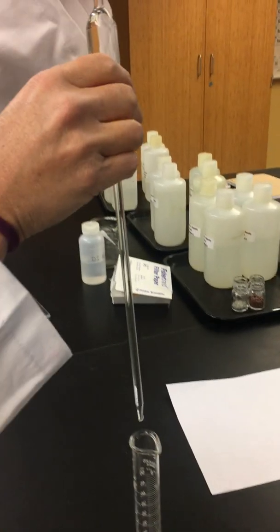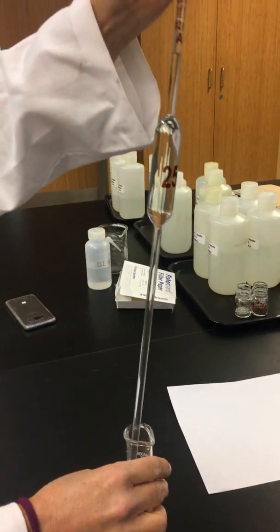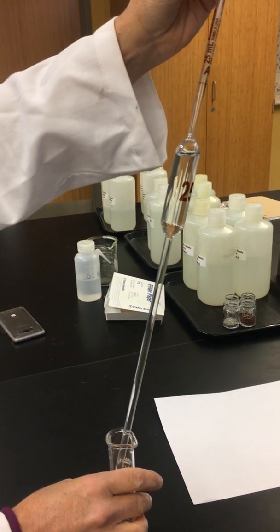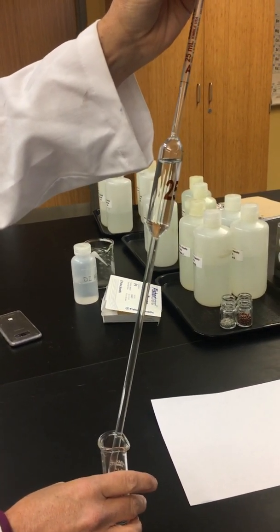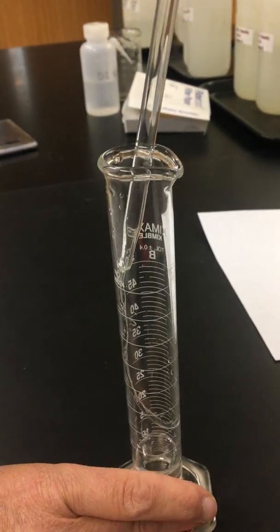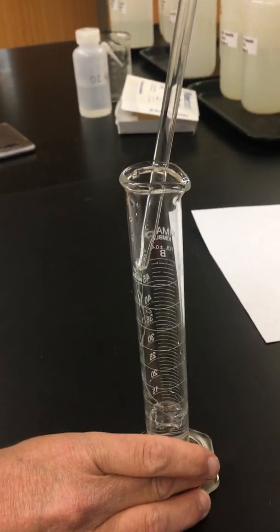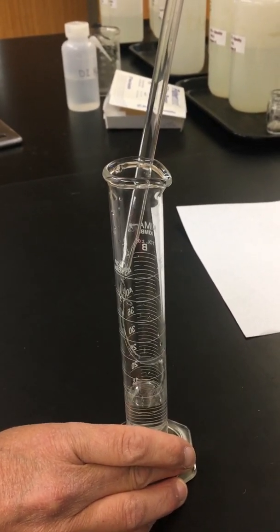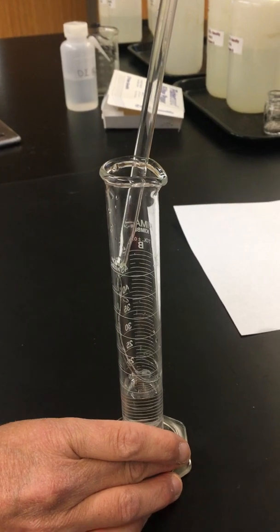So now we'll take our volume and pour it into the graduated cylinder. When we're ready to dispense our volume, we just let go of our finger, and we have it going into our graduated cylinder. Notice I'm touching the glass surface against the glass surface because it helps with the water to pull it through. We're slowly letting it drain out.